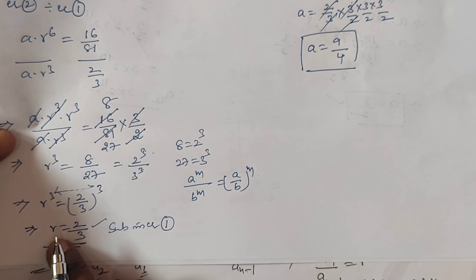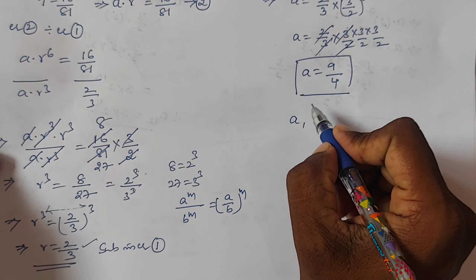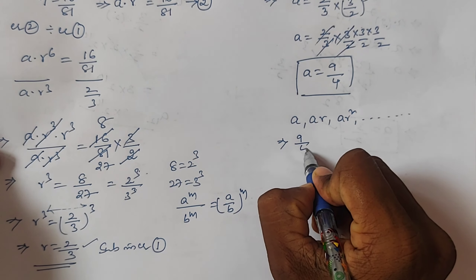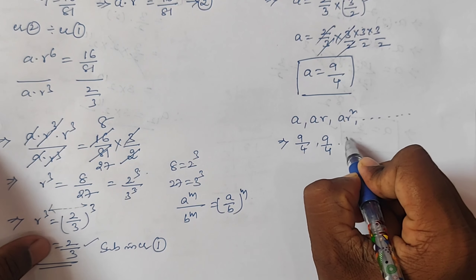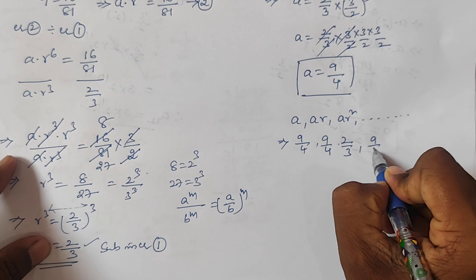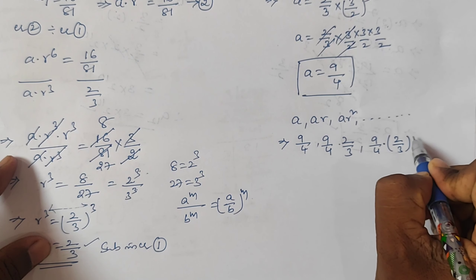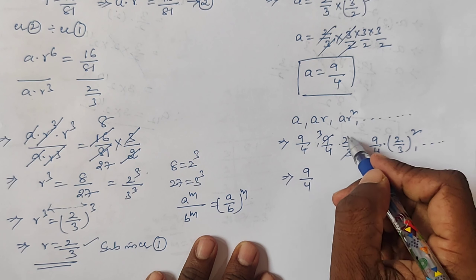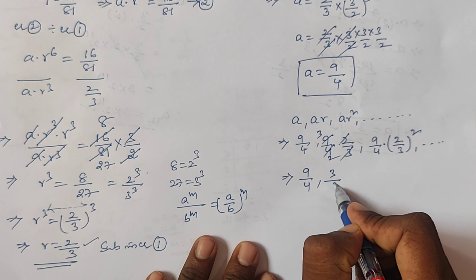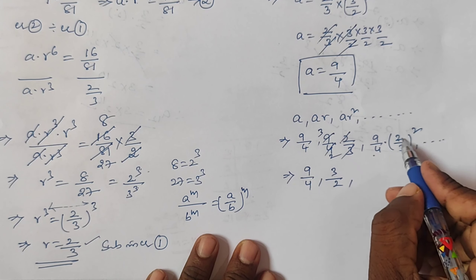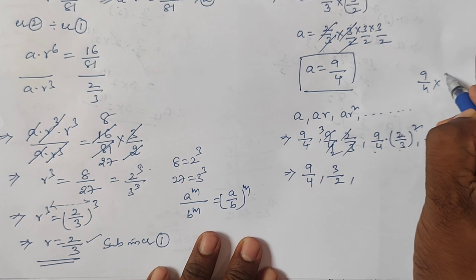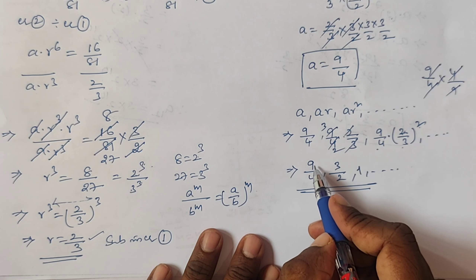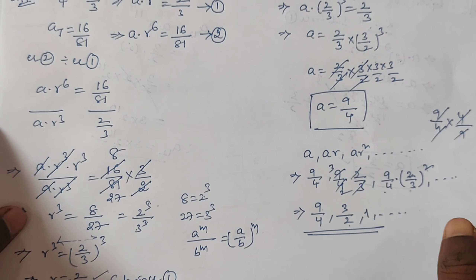The GP is: a, ar, ar², ... = 9/4, (9/4)(2/3), (9/4)(2/3)², ... Calculating: 9/4 × 2/3 = 3/2 and 9/4 × 4/9 = 1. So the required GP is 9/4, 3/2, 1, ...